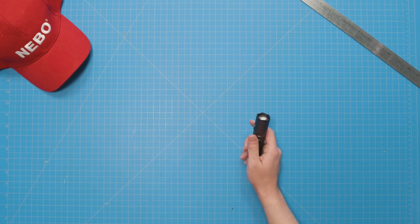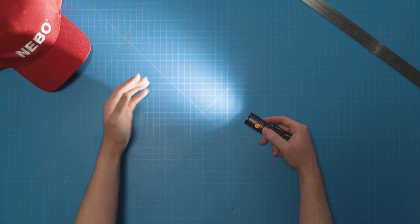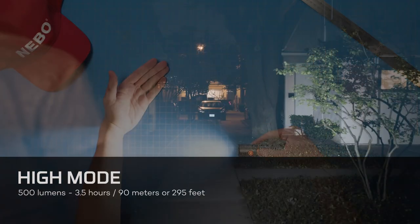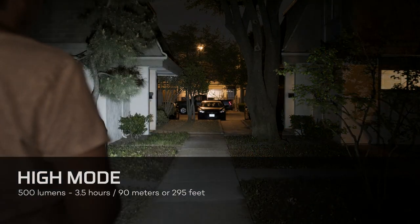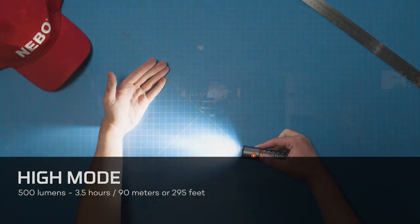To turn it on, simply press the N button once. The light will immediately turn on in high mode, which is up to 500 lumens for 3.5 hours of runtime, shining at a distance of up to 90 meters or 295 feet.